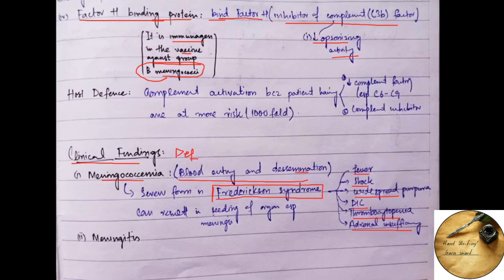It can result in seeding up organs, especially meninges causing meningitis. Second disease is meningitis which is characterized by stiff neck, fever and headache etc. This is the picture of a baby suffering from Neisseria meningitidis.